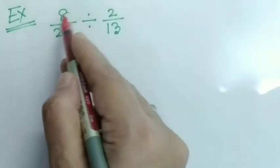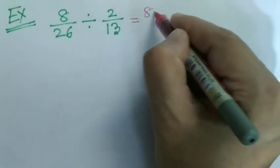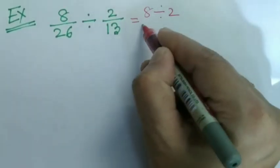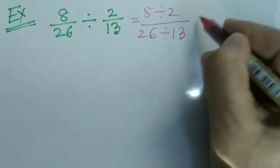8 divided by 26 divided by 2 by 13. You can solve this by simply dividing numerator by numerators and denominator by denominators.